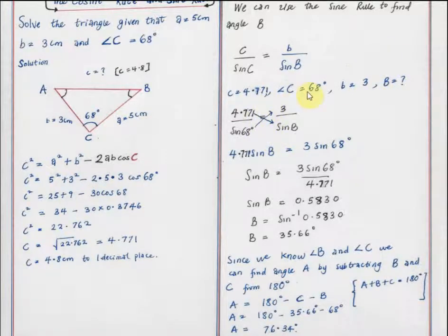So if we go ahead and put in these parameters here, we have 4.771 over sin 68 equals 3 over sin B. If we do the cross product, we have 4.771 times sin B equals 3 multiplied by sin 68. So sin B is going to equal 3 sin 68 divided by 4.771. Sin B equals 0.5830. B is going to equal arcsin 0.5830. And you can use a calculator to find that. And you're going to arrive at B equals 35.66 degrees.